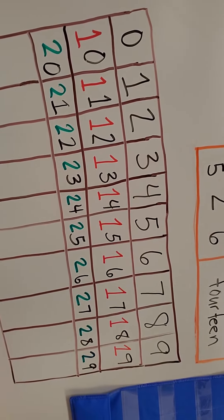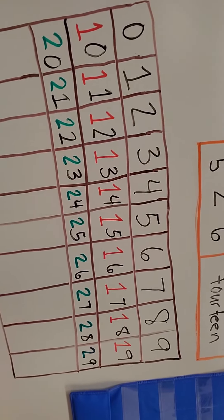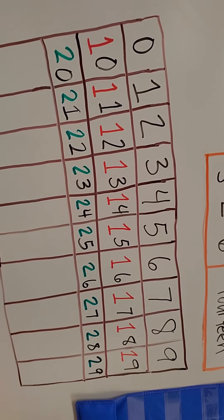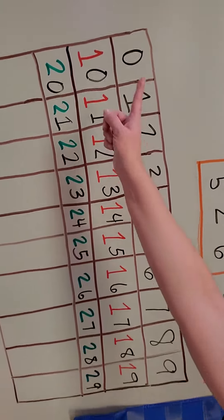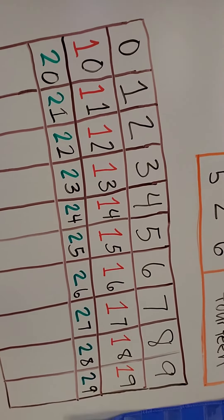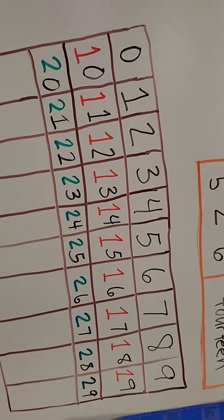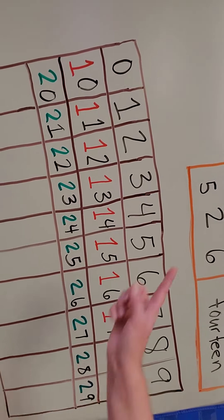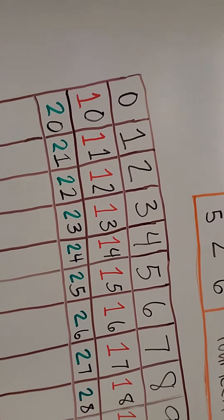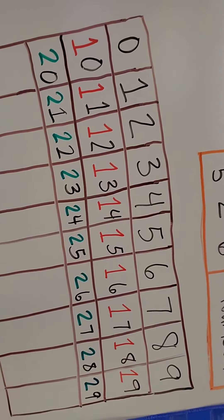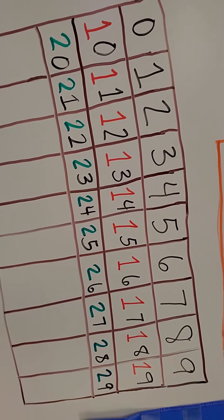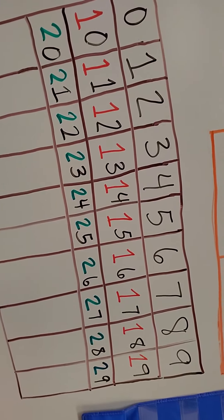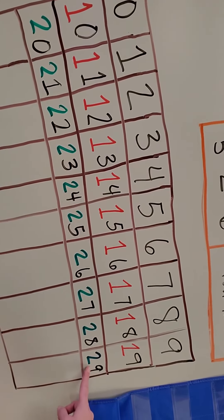Zero, one, two, three, four, five, six, seven, eight, nine, ten, eleven, twelve, thirteen, fourteen, fifteen, sixteen, seventeen, eighteen, nineteen, twenty, twenty-one, twenty-two, twenty-three, twenty-four, twenty-five, twenty-six, twenty-seven, twenty-eight, twenty-nine.